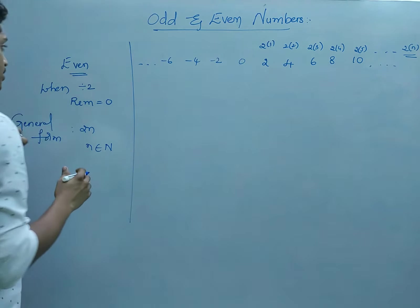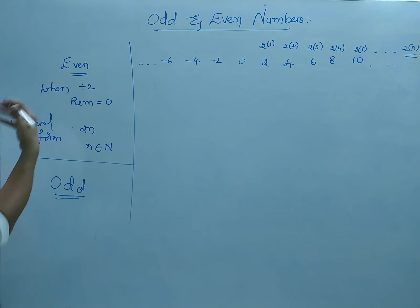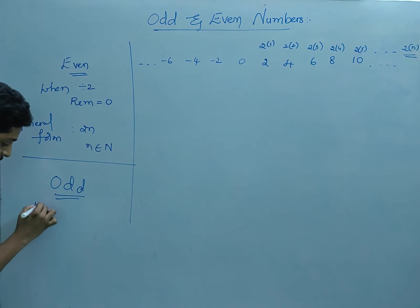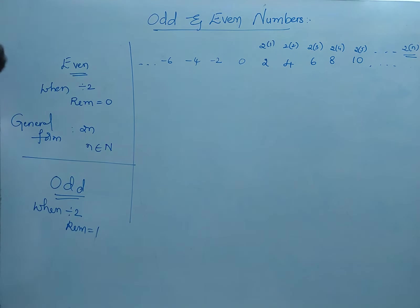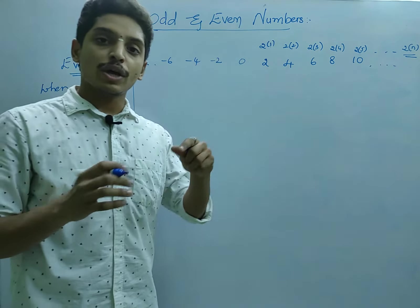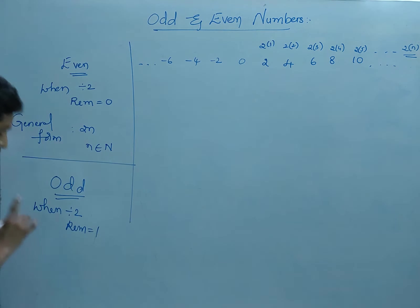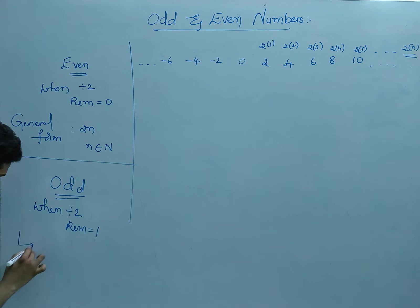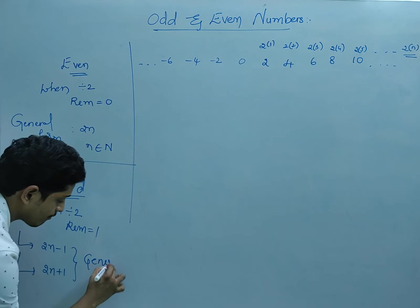Now let us talk about odd numbers. When a number is divided by 2, if the remainder is 1, that particular number is called an odd number. It should not be exactly divisible by 2. For the general format of odd numbers, there are two types: 2n minus 1 and 2n plus 1.